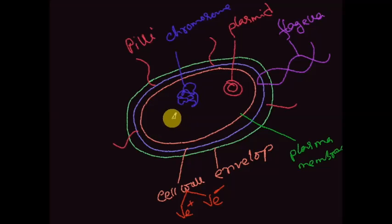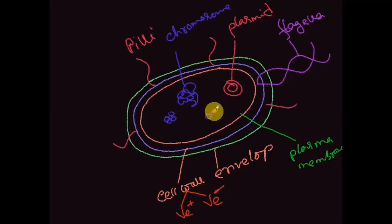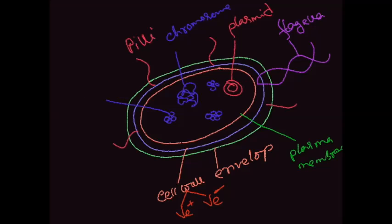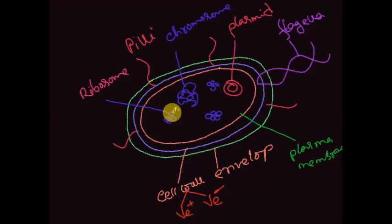Inside the bacterial cell membrane we see very small organelles found at most sites — these are called bacterial ribosomes. The ribosome is the site for bacterial protein synthesis, where bacterial RNA is involved.